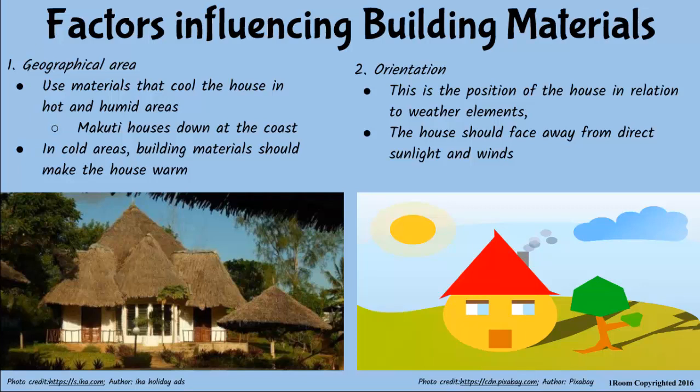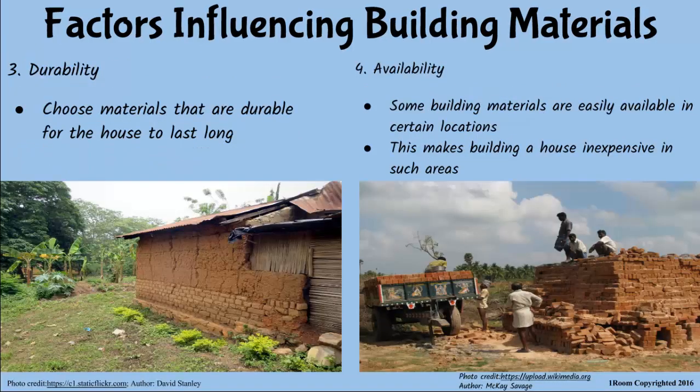Sorry, I don't get the connection between wind direction and type of materials. The position of the house should be in a way that the front side faces away from the direction of strong wind and direct sunlight. Plus, it should take best advantage of the natural view. Does that make sense now? A little. Research further on your own — you will get it.